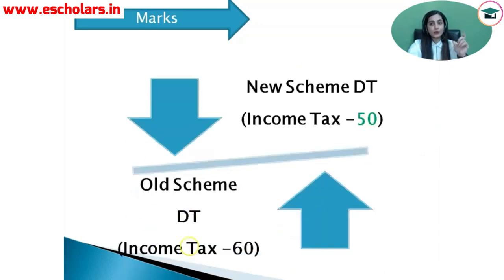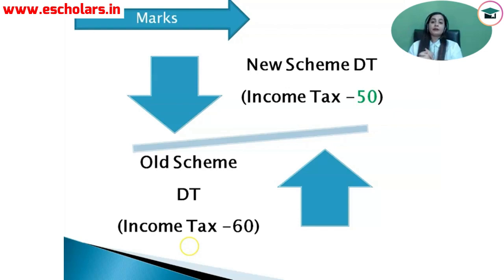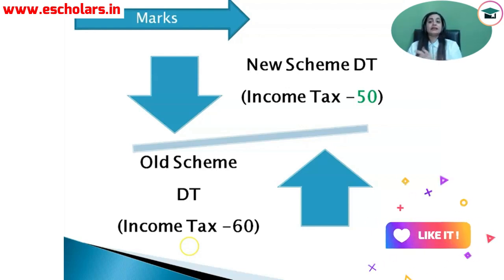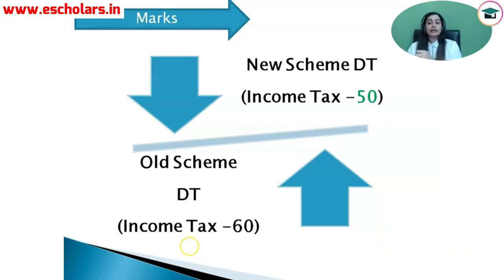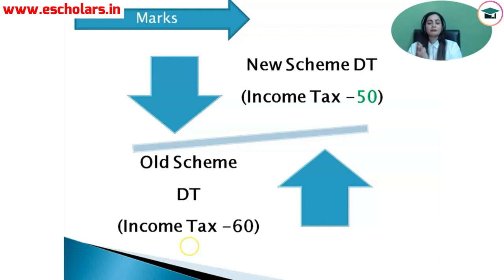For the old scheme, direct tax, that is income tax, was a 60-marks paper as we saw in the exam. On the other hand, in the new scheme, direct tax — income tax — will be seen in 50 marks. So 10 marks have been reduced. You might think the portion is big, but overall there is only one chapter that has been removed, and from that chapter the major important area — SEZ section 10AA — has been merged into the deduction chapter. So the 10-mark reduction makes sense, and we will now see the 50-marks direct tax income tax paper.